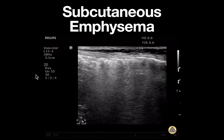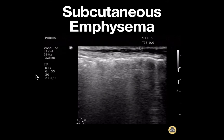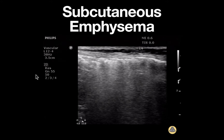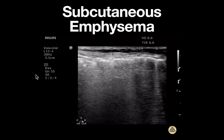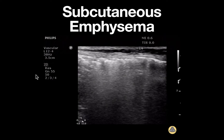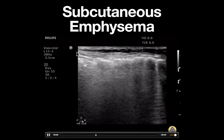This is an ultrasound clip demonstrating subcutaneous emphysema, or air in the soft tissue. A linear probe is used and in this case placed along the side of the patient's neck.